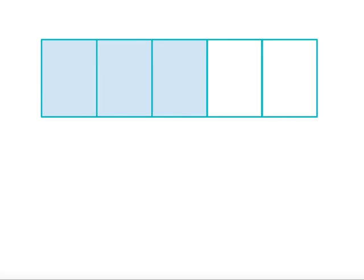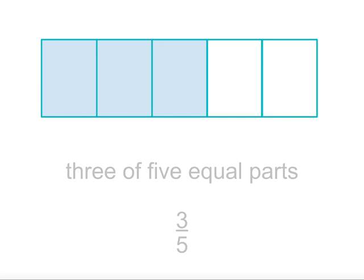Now, what fraction is represented by this bar? You can see there are five equal parts, and three of them are shaded. So the fraction is three of five equal parts, or three fifths.